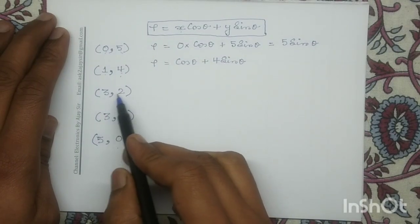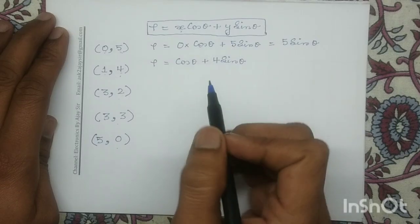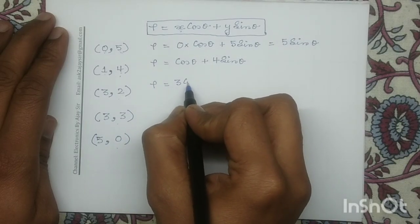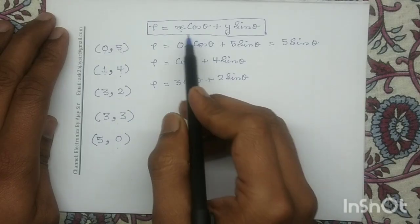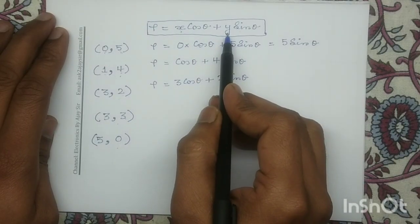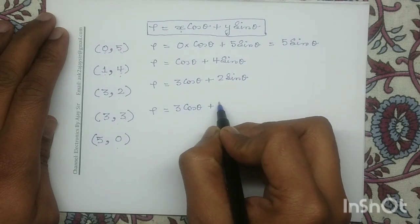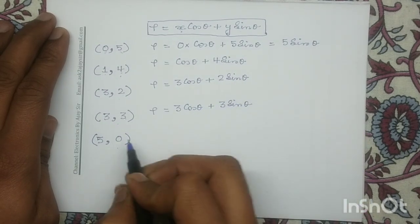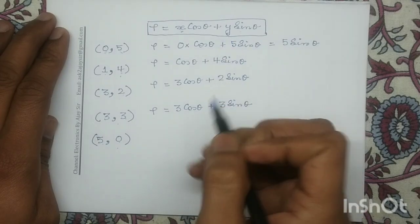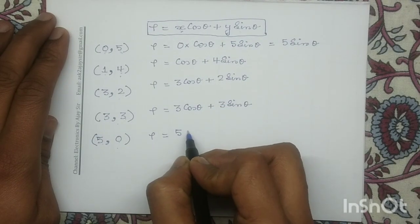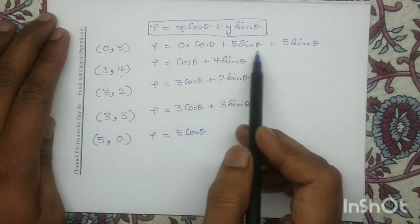For point (3,2), substituting x = 3 and y = 2 gives ρ = 3·cos(θ) + 2·sin(θ). For point (3,3), substituting x = 3 and y = 3 gives ρ = 3·cos(θ) + 3·sin(θ). For point (5,0), substituting x = 5 and y = 0 gives ρ = 5·cos(θ). This completes step 1: for all given points we have determined the equation of ρ.